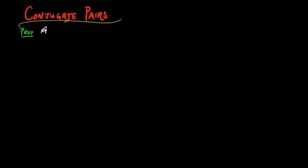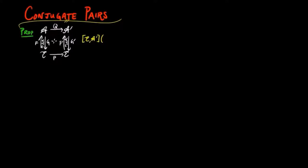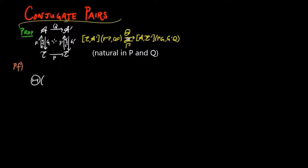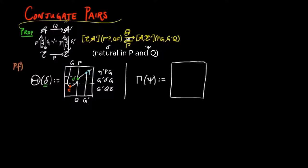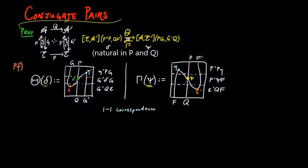Consider the following diagram of functors, where f, g, and f prime, g prime are adjoint situations, and we do not require any commuting conditions. Then there is a one-to-one correspondence between the collection of natural transformations from f prime p to qf, and the collection of natural transformations from pg to g prime q. We define the assignment theta on the natural transformation delta from f prime p to qf as g prime q epsilon, g prime delta g, eta prime pg, as given in the string diagram.